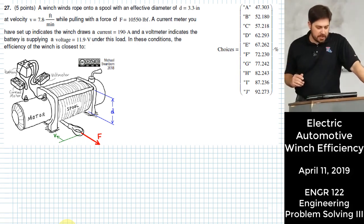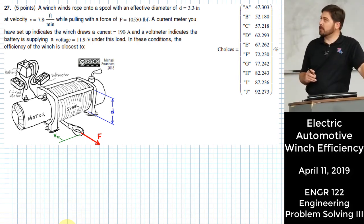A winch winds rope onto a spool that has an effective diameter of 3.3 inches and it winds it with a velocity of 7.8 feet per minute.